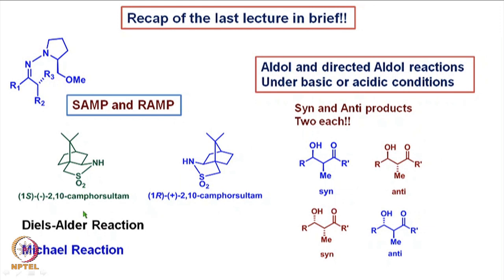We also looked at the camphor sultam based auxiliary as introduced by Oppolzer and saw the Diels-Alder reactions and Michael-Diels-Alder reactions in highly enantioselective fashions. Towards the end we looked at the aldol reactions and directed aldol reactions under basic or acidic conditions. We saw that if the aldol reactions are not directed then we keep on getting different mixtures of the products. But if we have a directed aldol reaction then we get specifically those types of products in which the two enantiomers of the syn product and two enantiomers of the anti products are formed. If the reaction is highly diastereoselective then one is the major over the other. That is how we looked at directed aldol reactions.